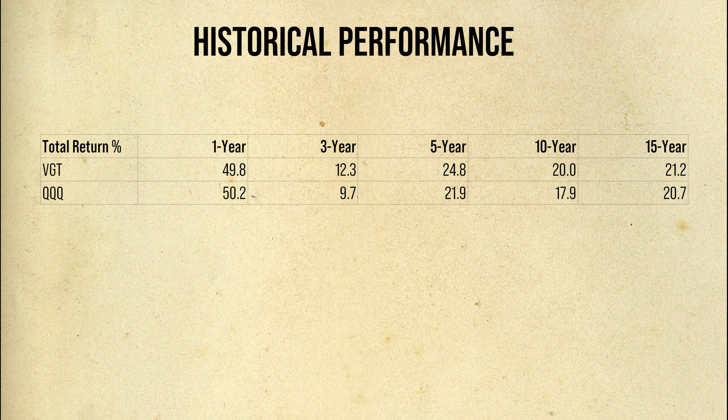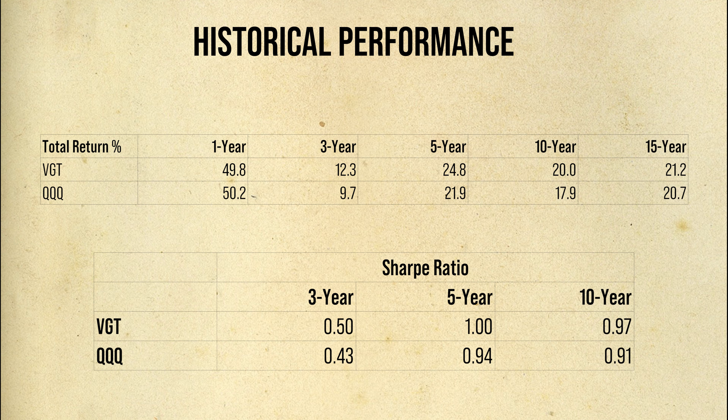The high concentration of Apple and Microsoft allowed VGT to match or even surpass QQQ's returns. As for risk-adjusted returns, the Sharpe ratio for VGT was better across 3, 5, and 10-year periods. To be honest, I'm not a big fan of risk-adjusted returns. Many prominent investors, including Howard Marks, view investment risk as a probability of a permanent loss of capital, and to calculate that risk you must have judgment and forecasts of future earnings — something difficult to do. Instead, the focus is often on the low-hanging fruit of price volatility, so I would be very careful with risk-adjusted returns and not let them cloud your decision-making.